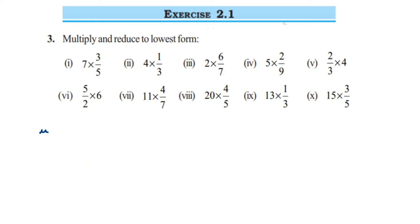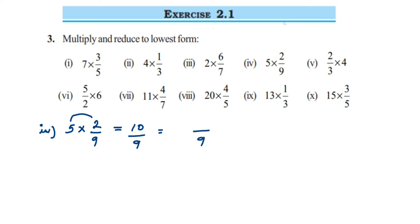Now the fourth question: 5 multiplied by 2/9. Again we cannot cancel or reduce, so multiply the numerators: 5 × 2 = 10, giving 10/9. This is also an improper fraction. Converting to mixed fraction: the denominator is 9; 9 × 1 = 9; remainder is 10 − 9 = 1. So the answer is 1⅑.